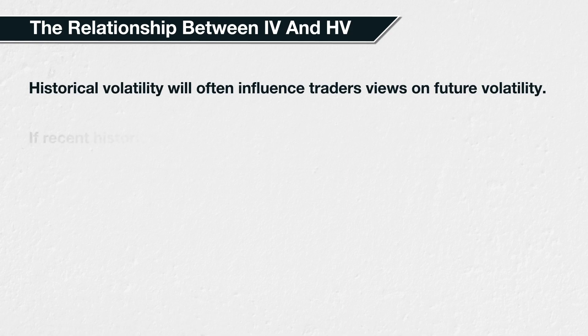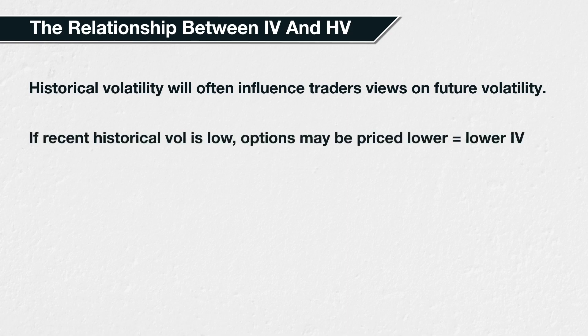For example, if historical volatility has been very low on Bitcoin for several weeks — meaning the price has not moved much — traders wishing to buy options may not be willing to pay very much for them, and traders wishing to sell options may be willing to accept less than usual for them. The reason being that they expect the recent low volatility to persist. These lower option prices translate into lower implied volatilities.